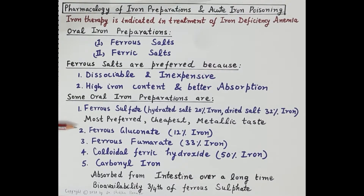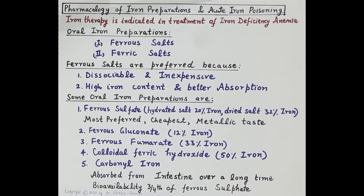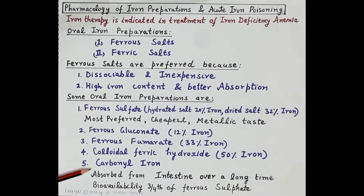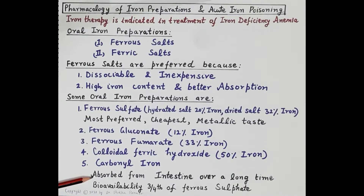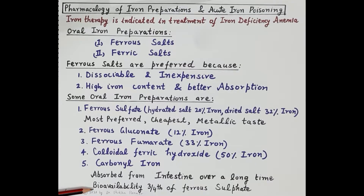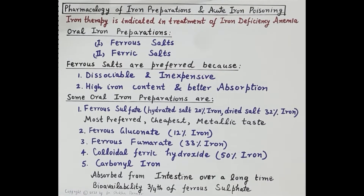Other oral preparations include ferrous gluconate, ferrous fumarate, colloidal ferric hydroxide, and carbonyl iron. Carbonyl iron is absorbed from the intestine over a long time, but its bioavailability is only three-fourths that of ferrous sulfate.